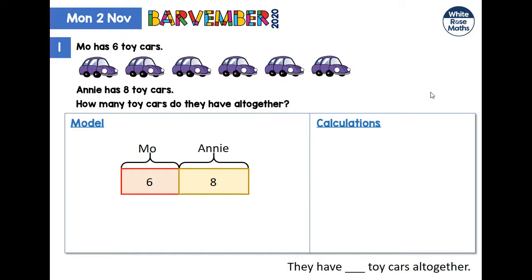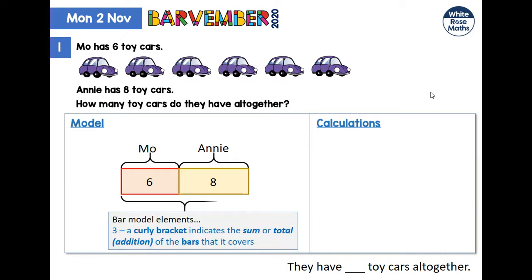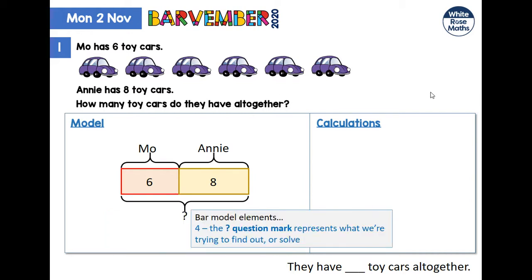We now do the same for Annie's. Our third bar model element is the curly bracket going across two parts or two bars, which indicates the sum or total — the adding of the bars it covers. Our fourth element is the question mark, which represents what we're trying to find out. In the question, 'how many toys do they have altogether?' — 'altogether' is a key word suggesting we're going to add things up.